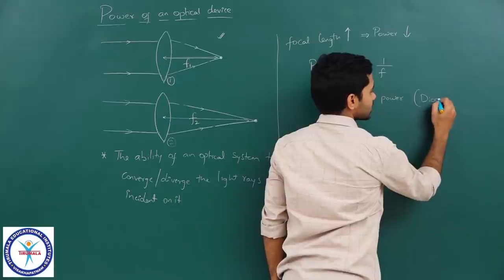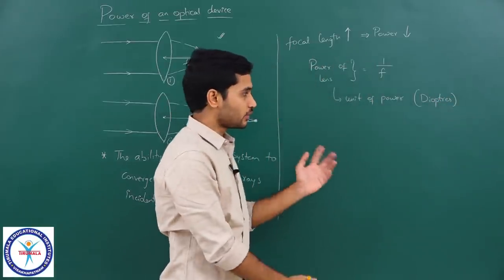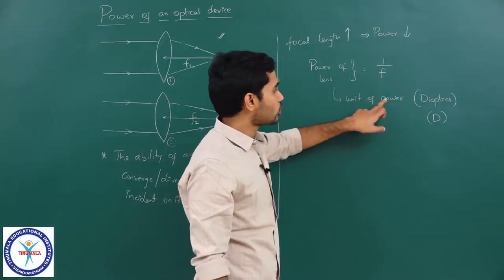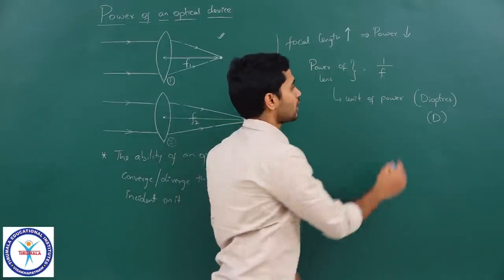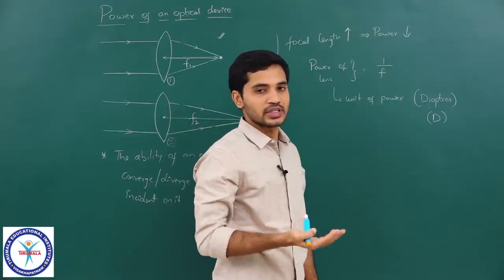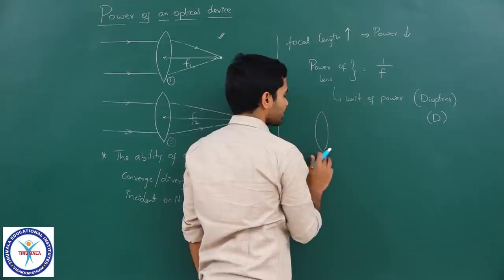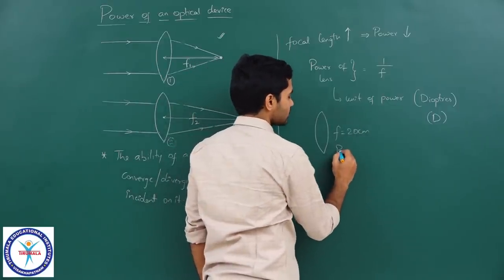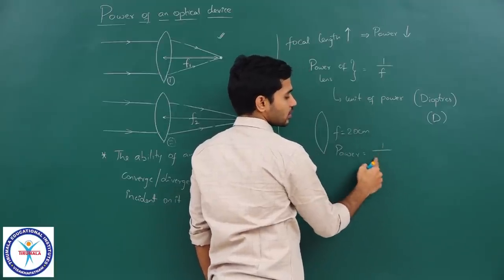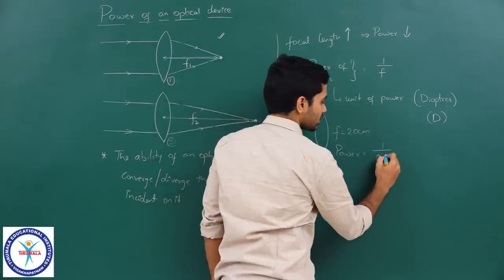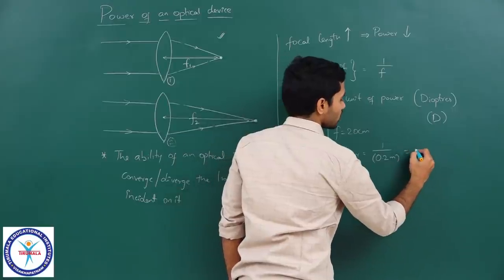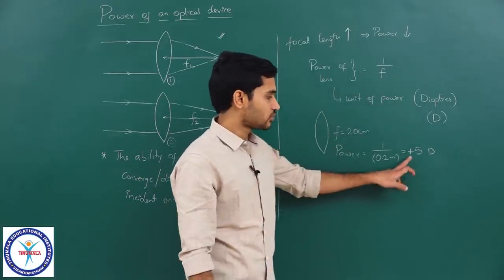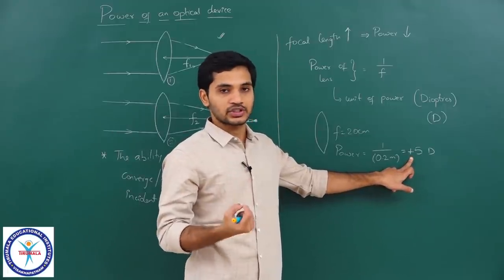The unit of power is not watts — it is called diopters, denoted with a capital D. To obtain power in diopters, you must substitute the focal length F in SI units, i.e., in meters. For example, if a convex lens has focal length 20 centimeters, power = 1/0.2 meters = +5 D.